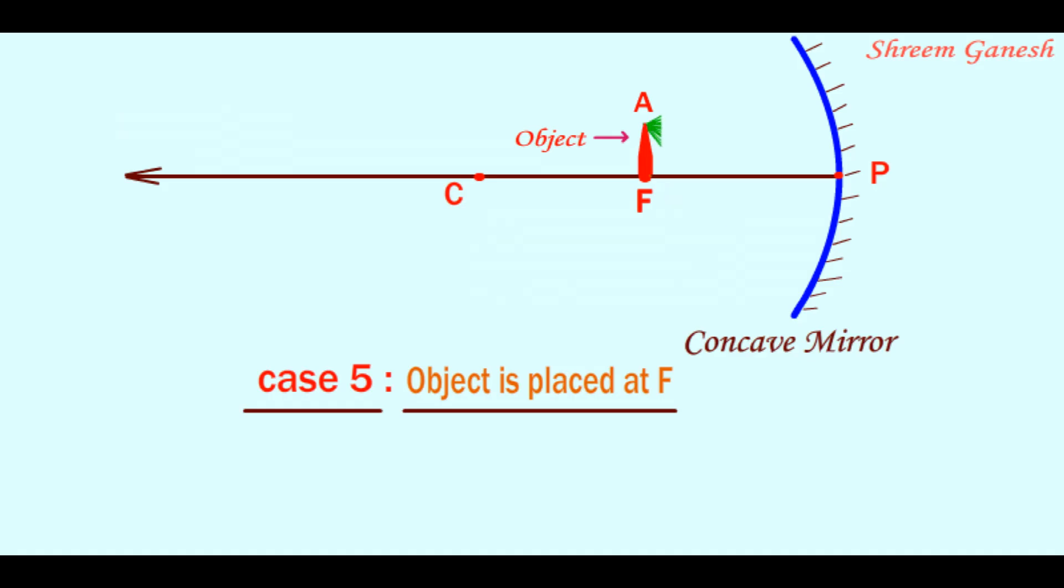There are infinitely many incident rays to the mirror which are passing through the point A. Out of these infinite incident rays, we shall consider only two particular incident rays. The first incident ray which is passing through the point A is also passing through the center of curvature of the mirror.